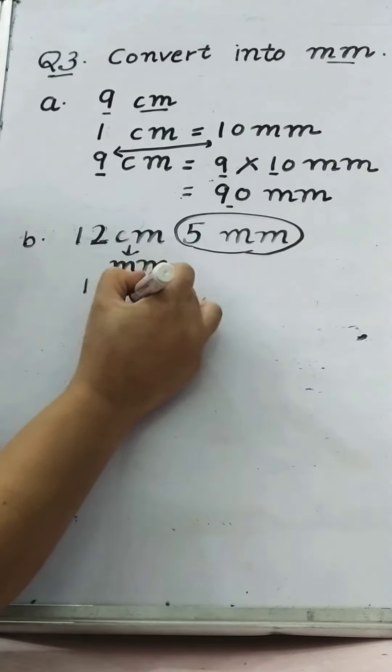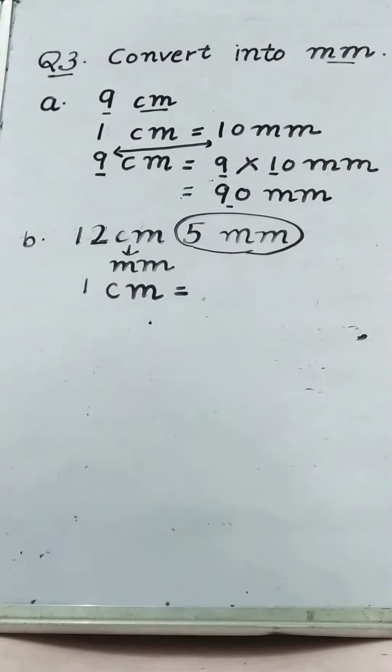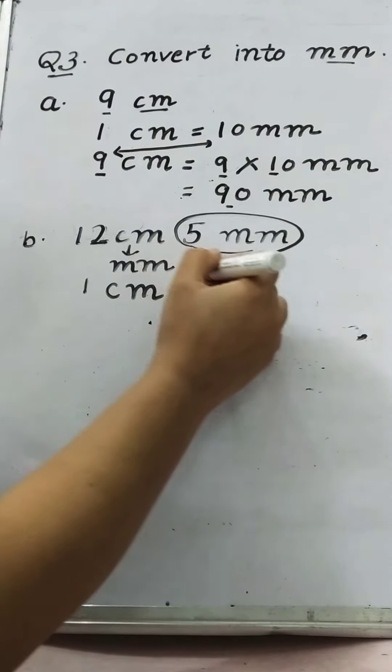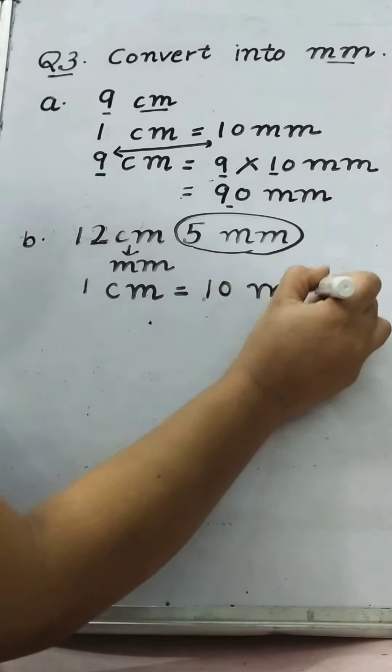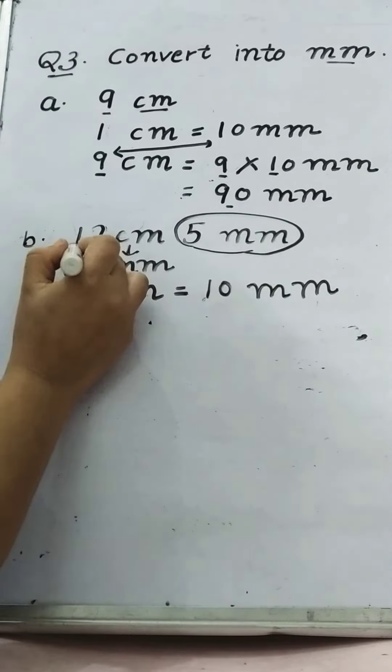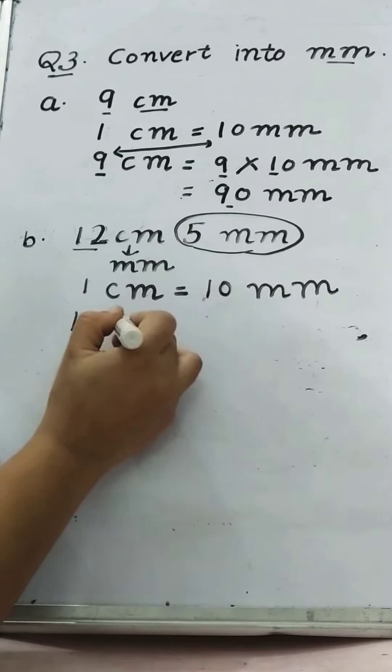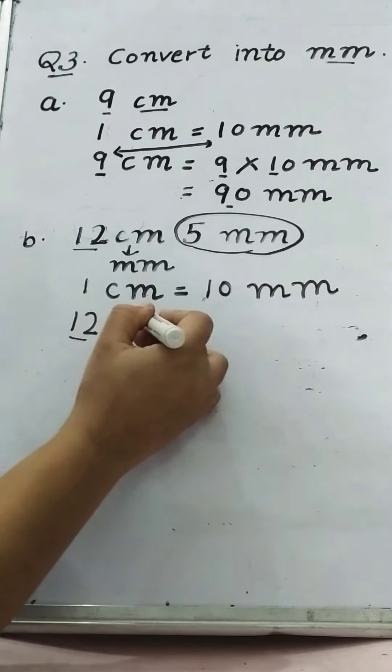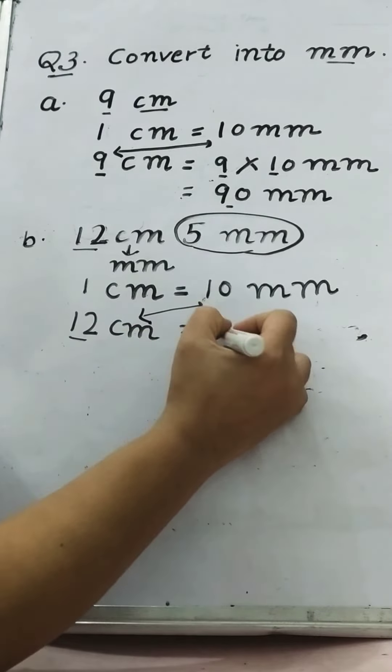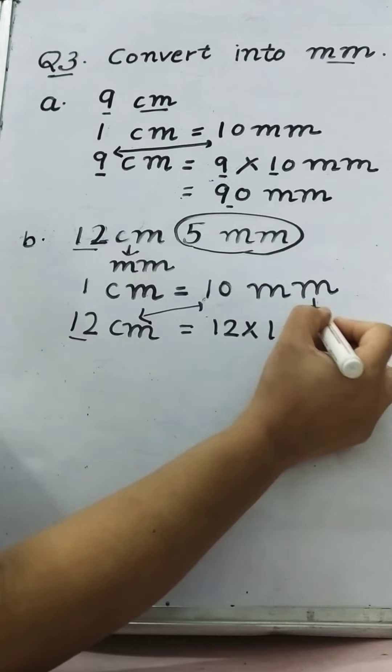Again, 1 cm is equal to how many millimeter? It is equal to 10 millimeter. And we are finding for 12 cm. It means we are finding for more. So we will multiply 12 by 10. 12 multiply by 10 millimeter.